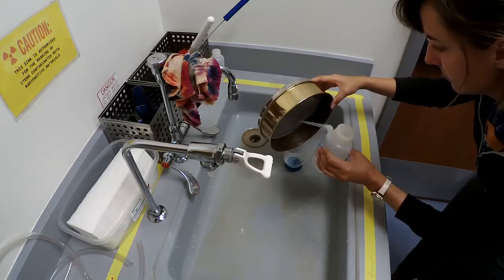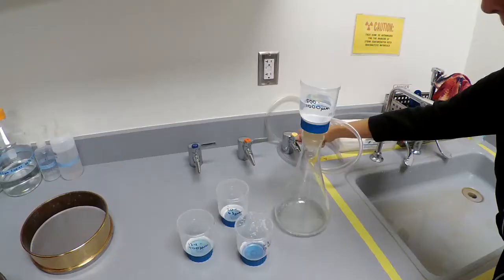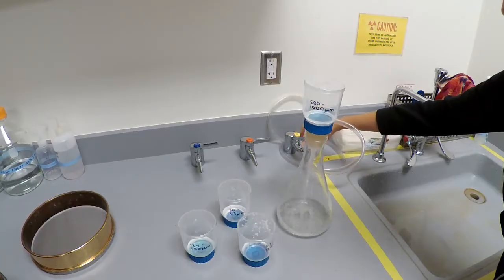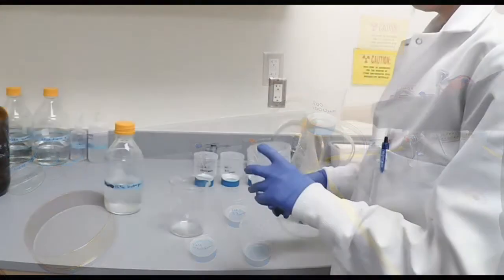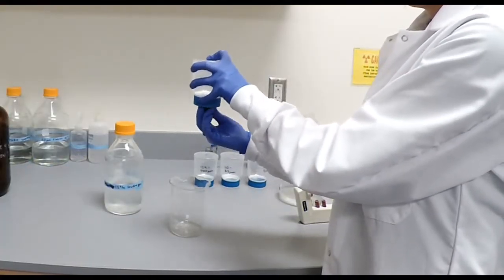Then backwash each sieve into the corresponding filtering unit with Nanopure water. Vacuum filter off any remaining water. Place a rubber stopper into the bottom of the filtering unit and place it into a secondary container.